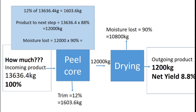During peeling and coring, we lose approximately 12% in trim: 12% of 13,636.4 kilos is 1,603.6 kilos. The remaining 88% — about 12,000 kilos — goes on to the drying step. From there, 90% moisture loss means 12,000 times 90% equals 10,800 kilos of moisture lost, leaving our outgoing product of 1,200 kilos.